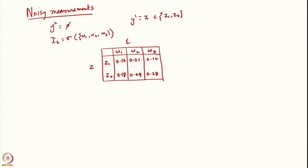You can check that adding up the columns gives the marginal distribution with respect to ψ: the columns sum to 0.3, 0.3, and 0.4 — which is the same marginal distribution we had earlier. So effectively we have been given a joint distribution p(ψ, z) whose marginal distribution agrees with our earlier distribution. It is a generalization of our earlier problem.